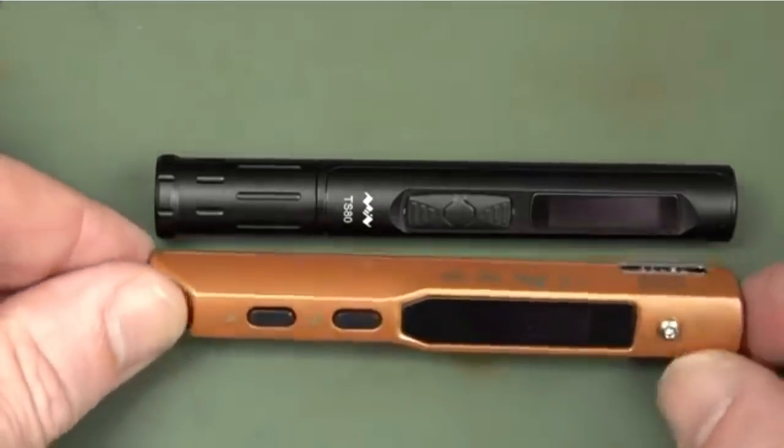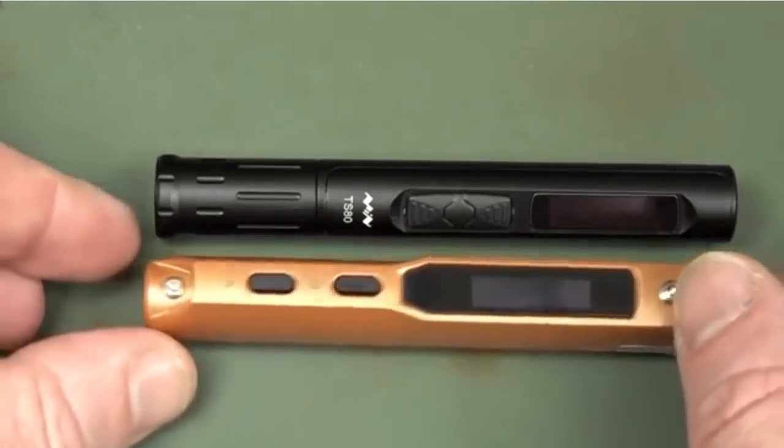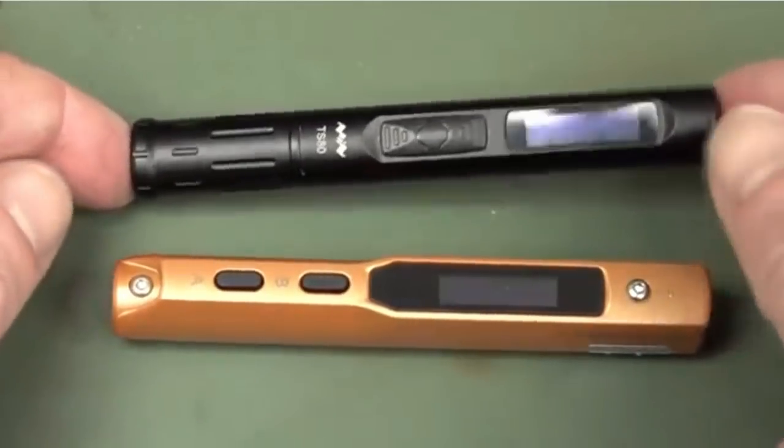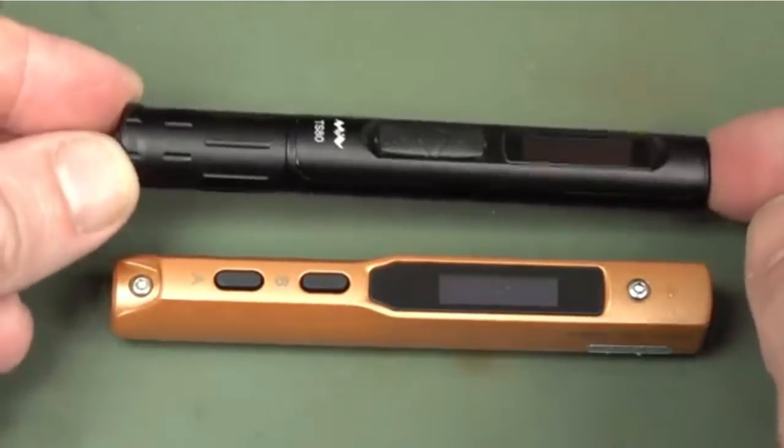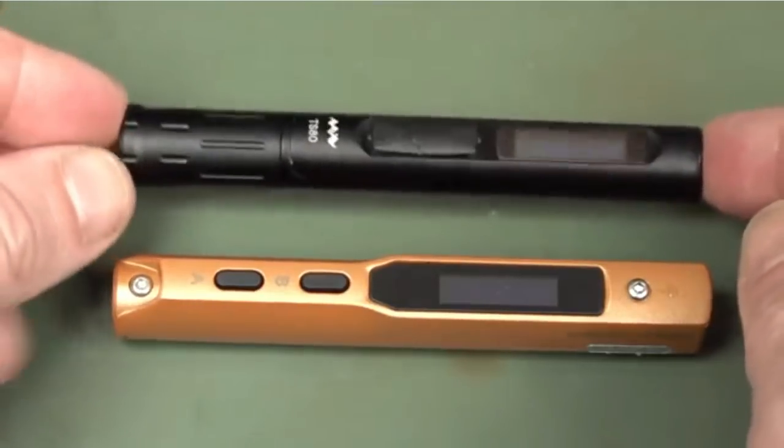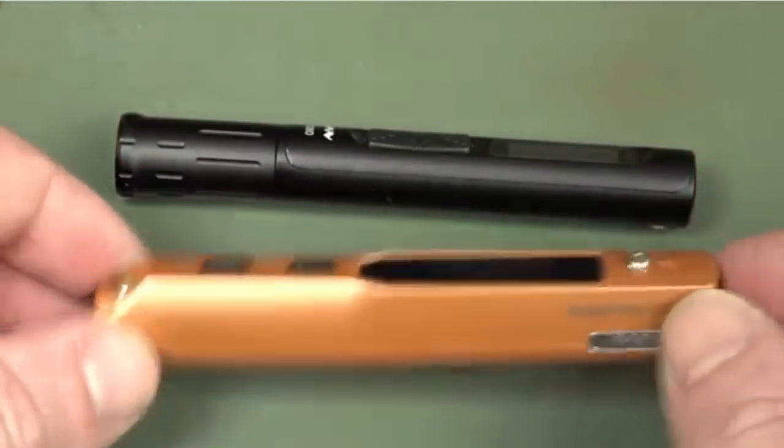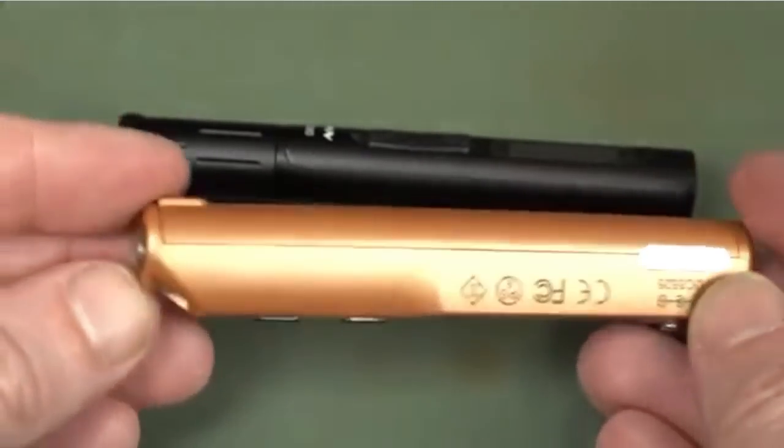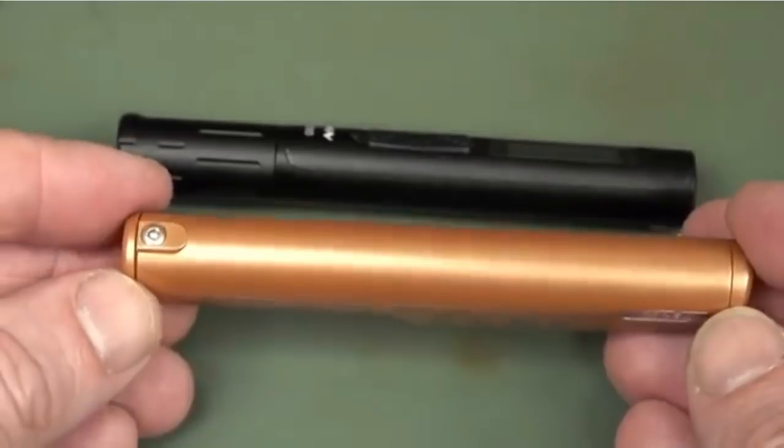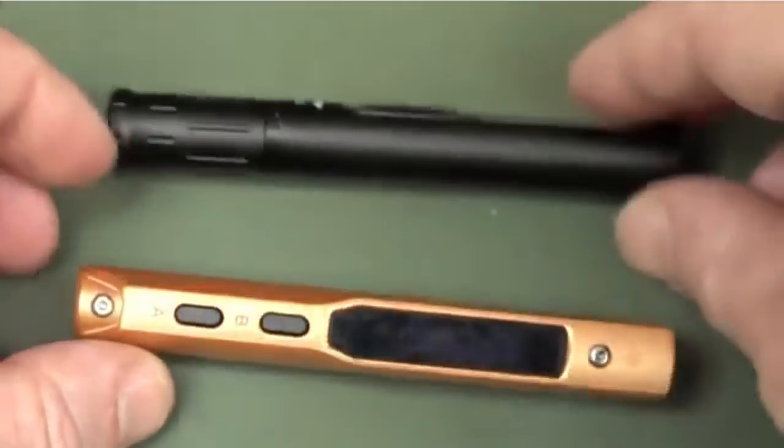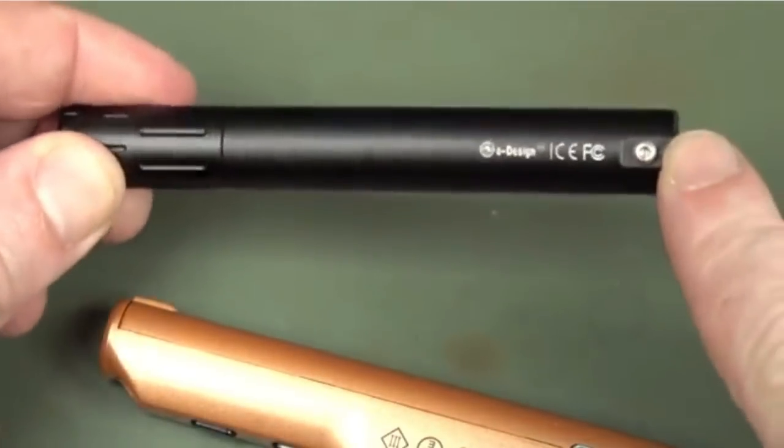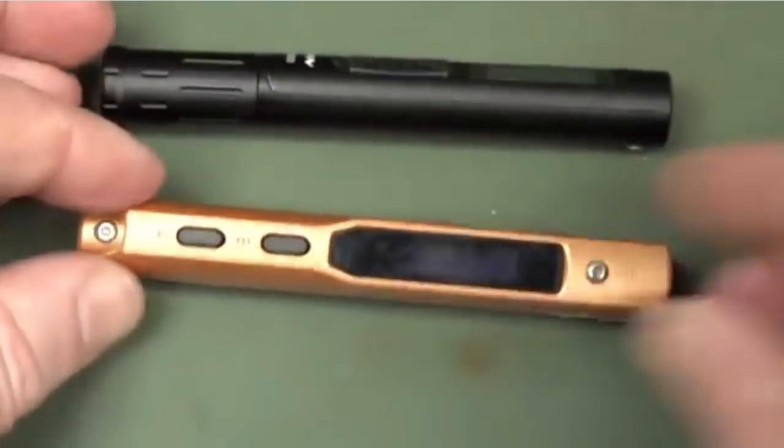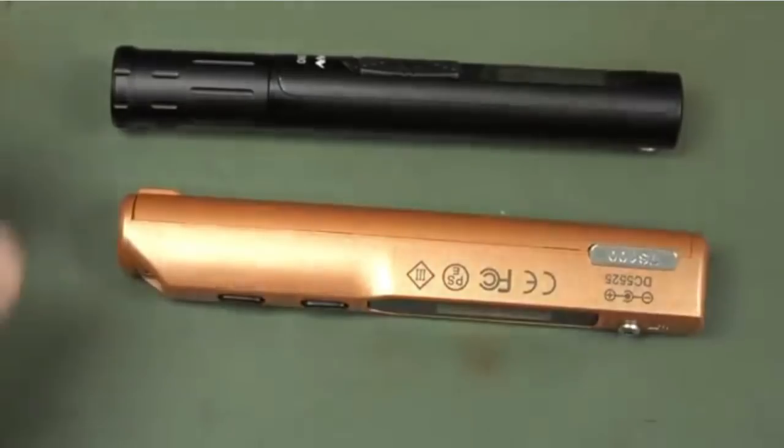Up close you'll notice that they're basically the same form factor, same length, everything else except the new TS80 beats it by a country mile because it's all anodized aluminum construction. Very nice, superb build quality. The TS100, just chintzy plastic. I don't like it. It doesn't instill a lot of confidence in me. Absolutely no contest there.